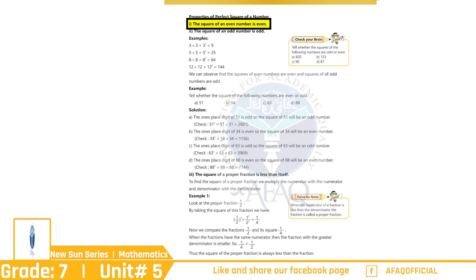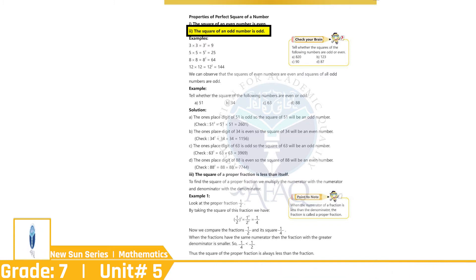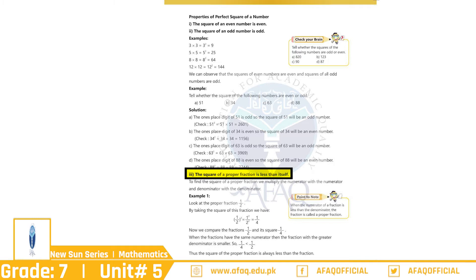Properties of Perfect Squares: 1. The Square of an Even Number is Even. 2. The Square of an Odd Number is Odd. 3. The Square of a Proper Fraction is Less Than Itself.